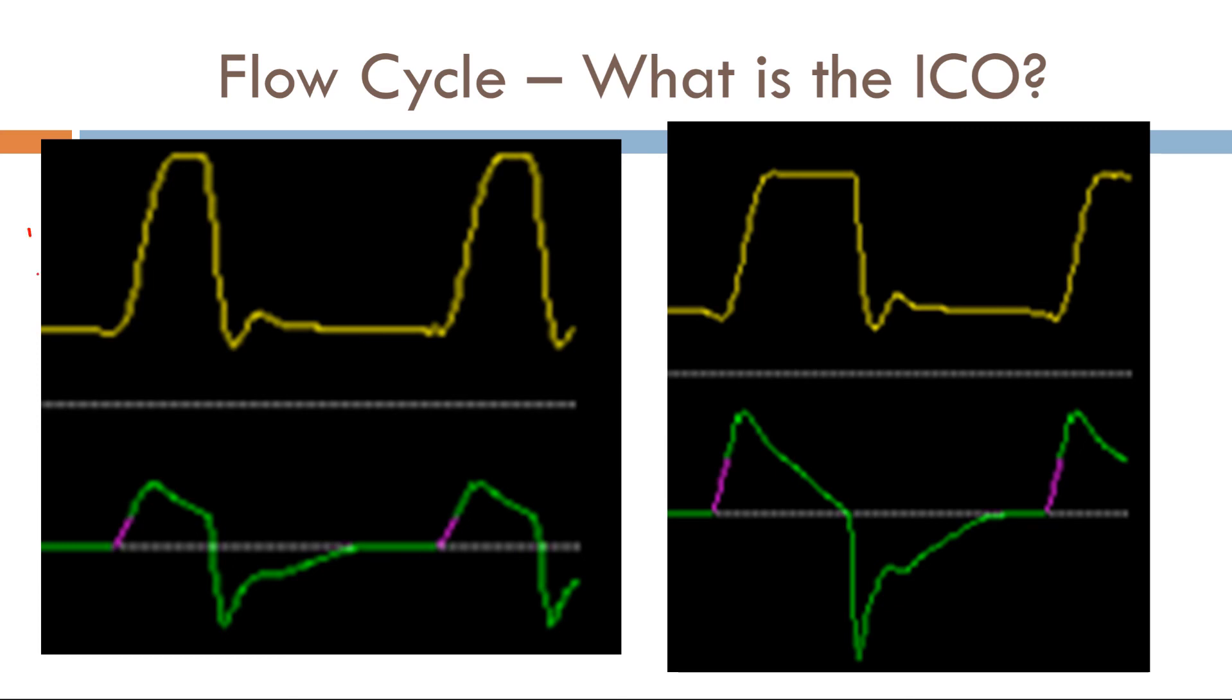Okay, so let's take a quick look. Here's our pressure scaler. Here's our flow scaler. So the way we determine the ICO or the inspiratory cycle off is by looking at the flow scaler, determining what 100% is, which is right here. So right here is where the breath stops right around here. So right here I would say this is about 50% of the peak inspiratory flow. So ICO here I would say is 50%. Let's contrast that with here.